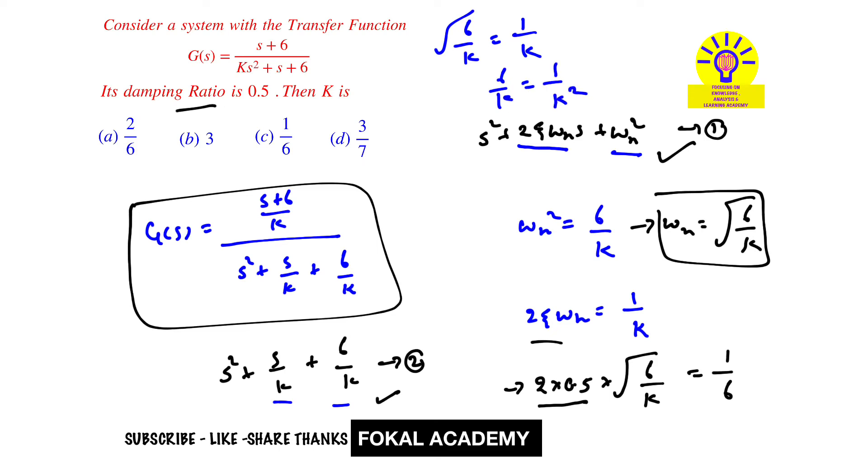So in the denominator here 1k, 1k cancel and becomes 1/k = 6. So from this k = 1/6. So whenever k = 1/6, the damping ratio is 0.5 for the given system.